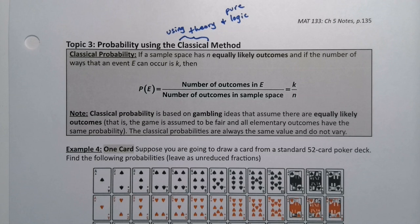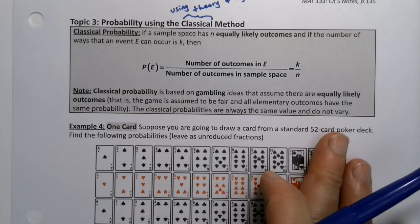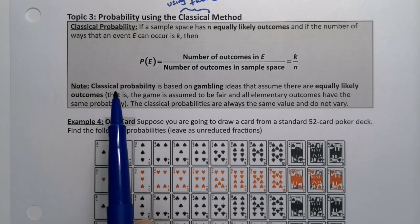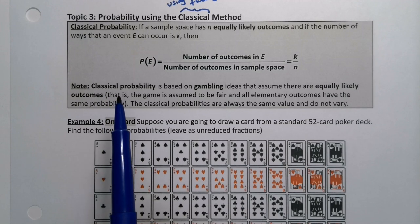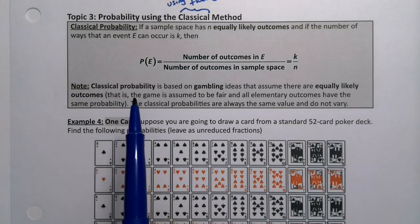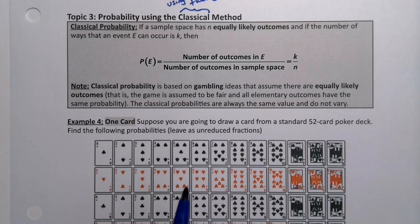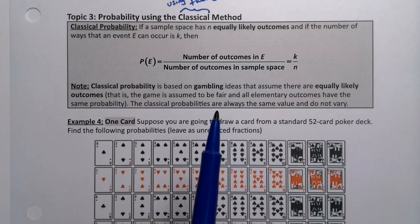You've actually already found classical probabilities. When we did those roulette probabilities earlier, that was classical probability — you just looked at the roulette wheel, imagined that it was fair, and assumed every single slot was equally likely, and therefore you could find the probabilities. It's called classical probability because it's older. This is the probability that Cardano, Pascal, and Fermat were originally working with — they wanted to gamble and make money off of their less mathematically-minded friends, so they wanted to figure out the theories behind how gambling works, and that's all based on classical probability.